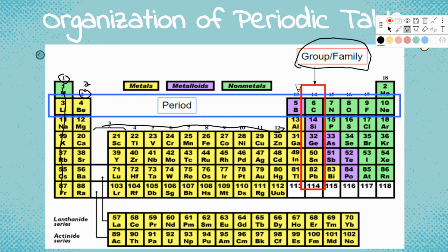We're not going to concern ourselves with the middle groups — that's more for an advanced chemistry class. For now, let's focus on these. This should be group 13, and for this one pay attention to the second digit — the three — telling you there are three electrons on the outer shell. Group 14 has four electrons on the outer shell. Group 15 has five, group 16 has six, group 17 has seven, and group 18 has eight electrons on its outer shell. That's how they're broken up into groups or families.